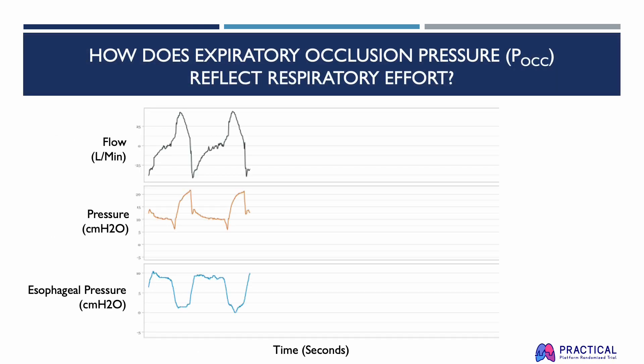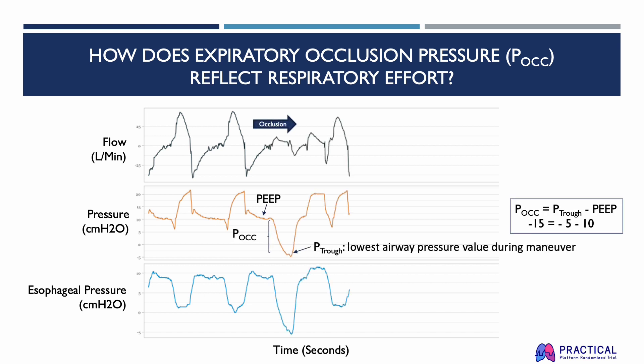This is an example of how different waveforms would look on the mechanical ventilator during an expiratory occlusion pressure maneuver on a patient with vigorous spontaneous breathing efforts. To calculate PEOC, you subtract the PEEP from the lowest airway pressure value during the occlusion pressure maneuver — we will temporarily call this value P-trough. In this example, the PEEP is 10 centimeters of water and the P-trough is minus 5 centimeters of water, making the expiratory occlusion pressure minus 15 centimeters of water.